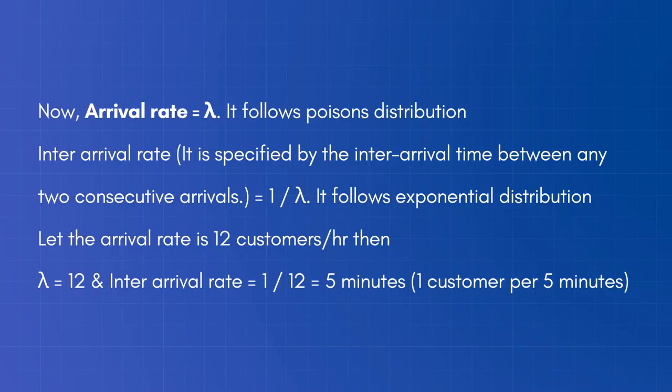The arrival rate, given by lambda, follows a Poisson distribution. The inter-arrival rate is specified by the inter-arrival time between any two consecutive intervals. It is given by 1 divided by lambda and follows an exponential distribution. For example, if the arrival rate is 12 customers per hour, then lambda equals 12 and the inter-arrival rate would be 1/12, or 5 minutes per customer.